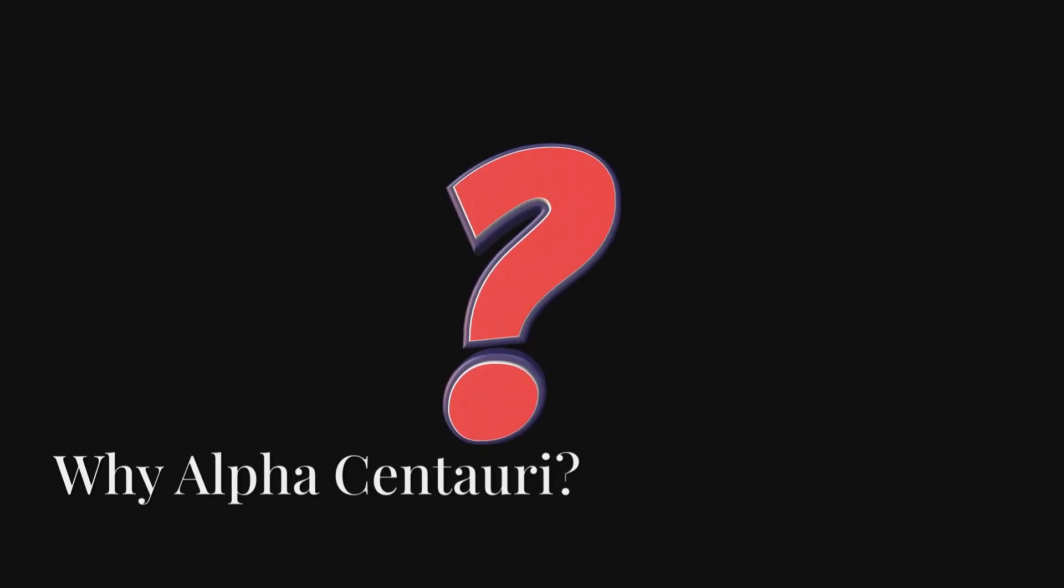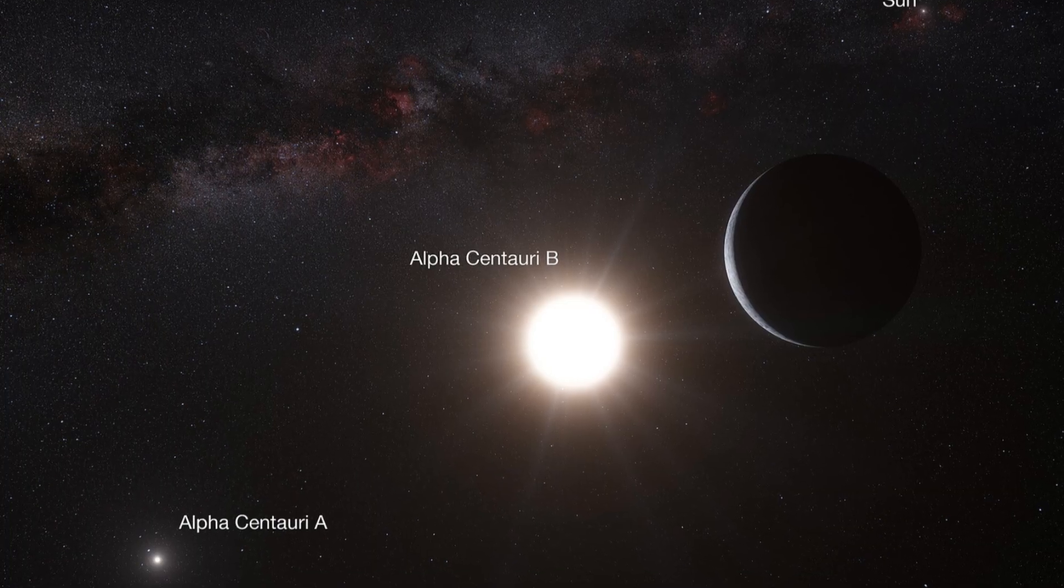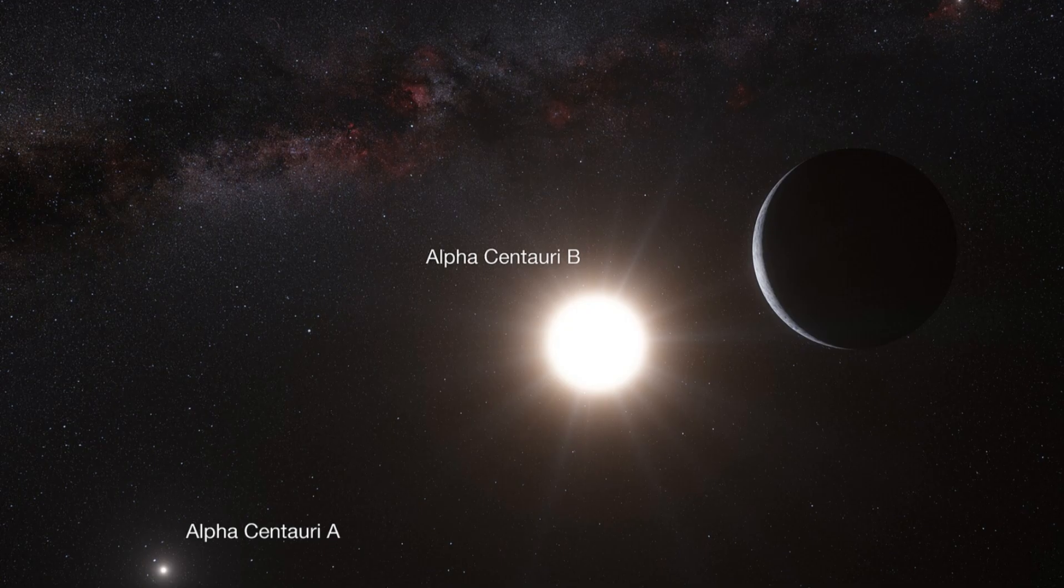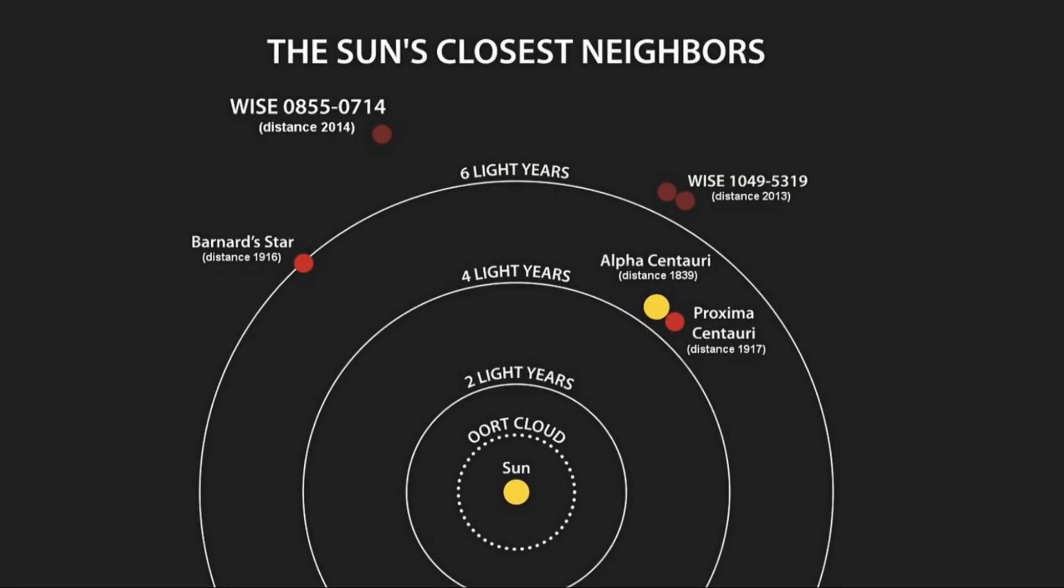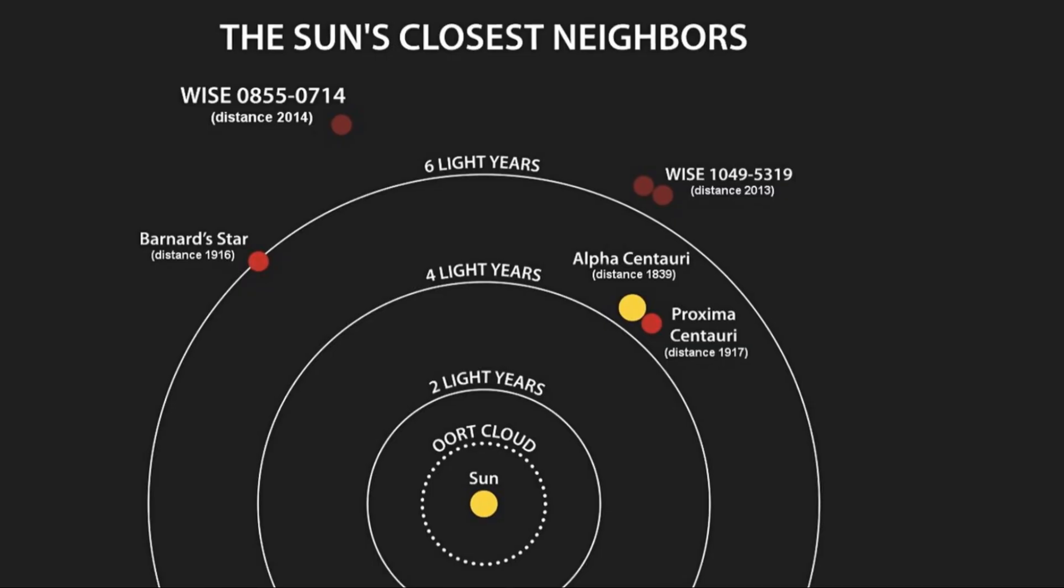Okay, first, why go to Alpha Centauri? Because it's the closest star system to our own, a mere 4.37 light years away. That might sound close, astronomically speaking, but let's put it in perspective.